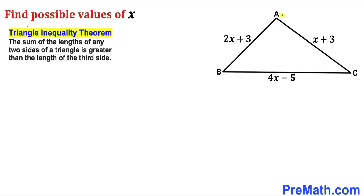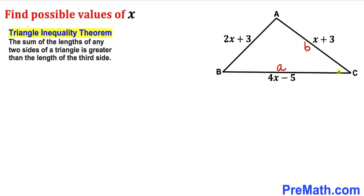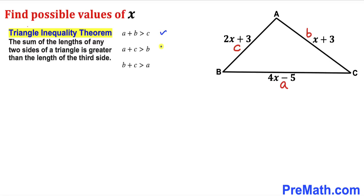Focusing on triangle ABC, the side opposite vertex A is called lowercase a, the side opposite vertex B is lowercase b, and the side opposite vertex C is lowercase c. This gives us three scenarios: a plus b is greater than c, a plus c is greater than b, and b plus c is greater than a.